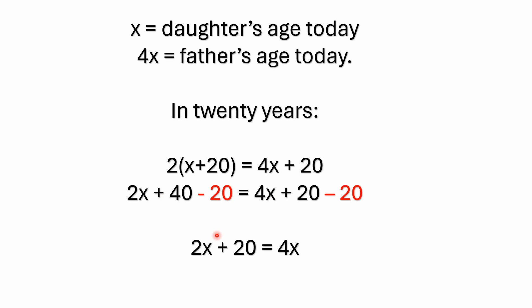you're going to end up basically here with 2X plus 20 on the left side because 40 minus 20 is 20. And then on this right side, 20 minus 20 is 0. 4X plus 20 minus 20 would leave us with just the 4X over here on the right.